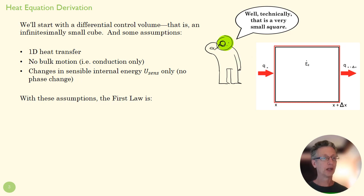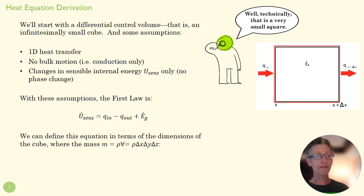With those assumptions, we can go to our first law and I can write the first law like this: the change in sensible temperature is equal to whatever energy is going in plus whatever is going out plus whatever is being generated. If we recognize this as being proportional to the change in temperature and also calculate the mass of this cube by multiplying the density of the material times its three dimensions...